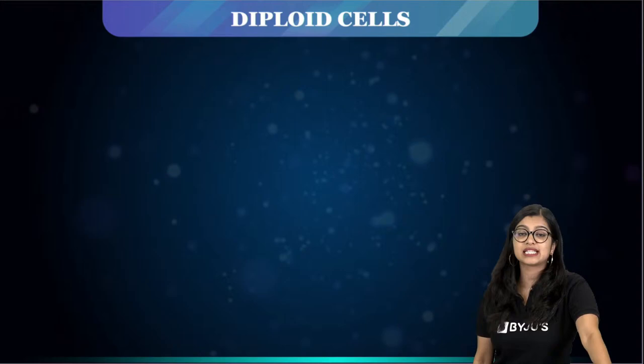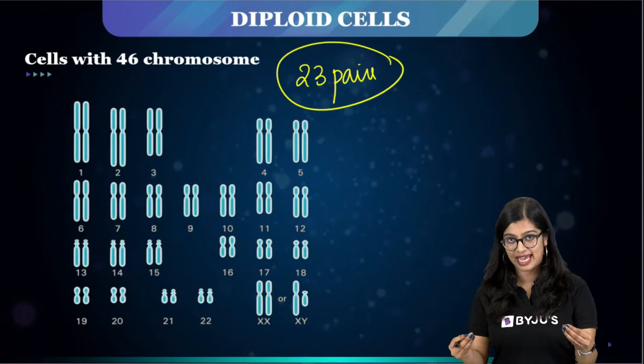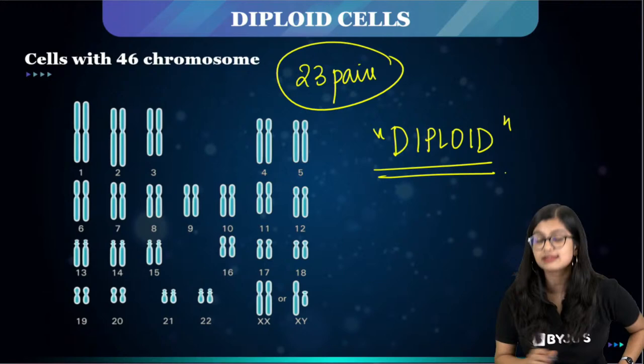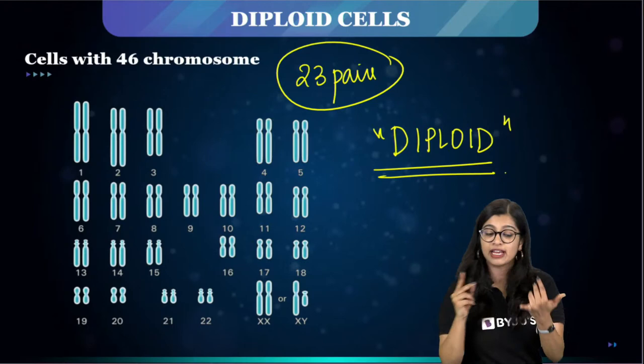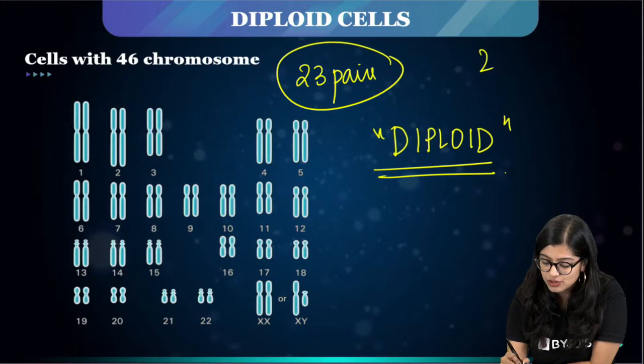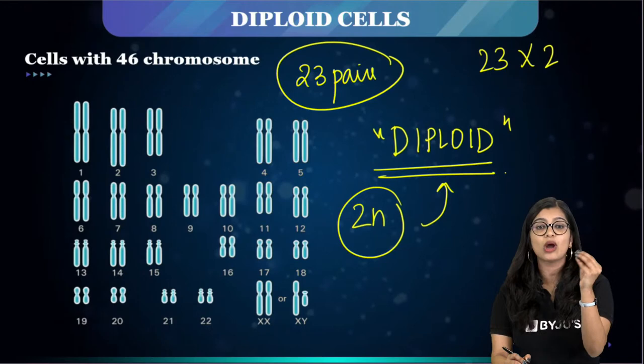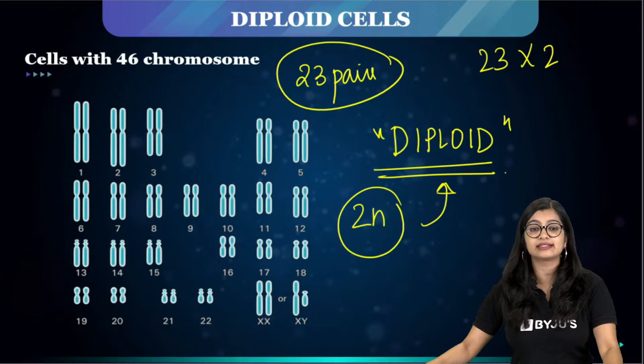Now, cells which have 46 chromosomes — 23 pairs — we call such cells diploid cells. Please remember this term because in 10th standard in chapters like reproduction and heredity, diploid and haploid will come up. When you have a cell with 23 pairs — that is 23 × 2 — we call them diploid, or we represent diploid as 2n.